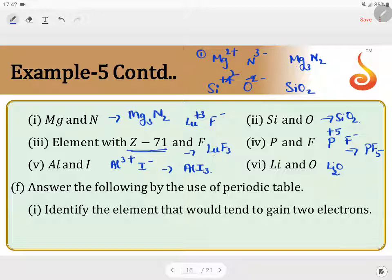Identify the element that would tend to gain 2 electrons. 2 electrons is gained by oxygen. Name the element. It should be oxygen.